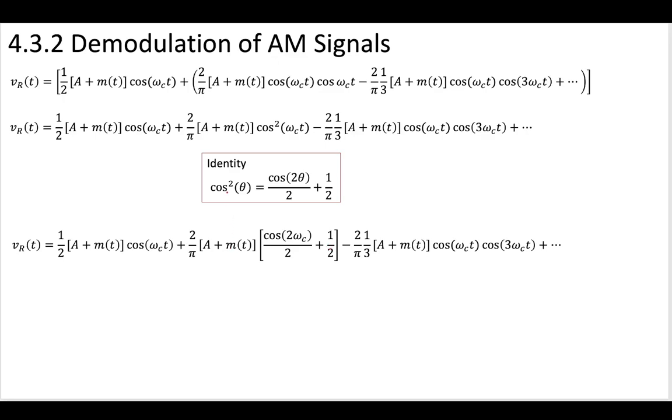This is good, because we're trying to recover our message. This is how we recover the DSBSC messages, too, is we somehow were able to get that message term that didn't have a cosine associated with it, and that was the baseband signal. So, by introducing this identity, we can see that this term here is likely going to yield us the message by itself, all by itself at the baseband.